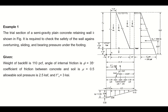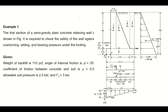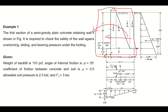In this example, a trial section is given to you and you have nothing to do with the sections. This trial section is given, and it is required to check the safety of the wall against overturning, sliding, and bearing pressure under the footing. You have to check whether it fails in the overturning manner, whether it is failing in the sliding manner, or whether the soil beneath the wall fails.